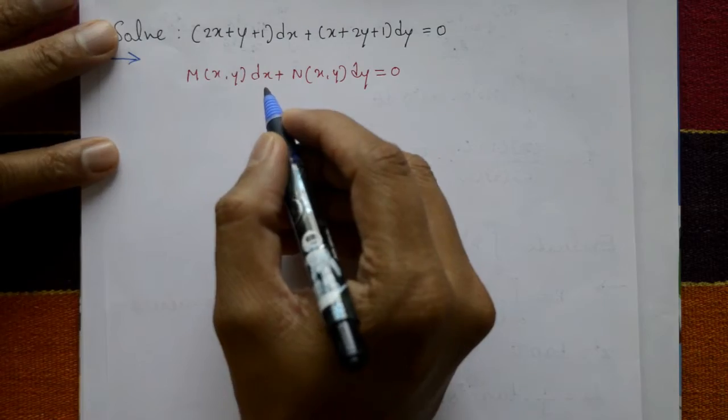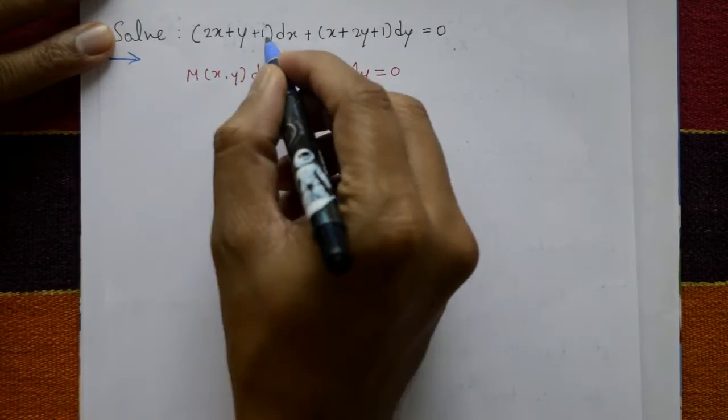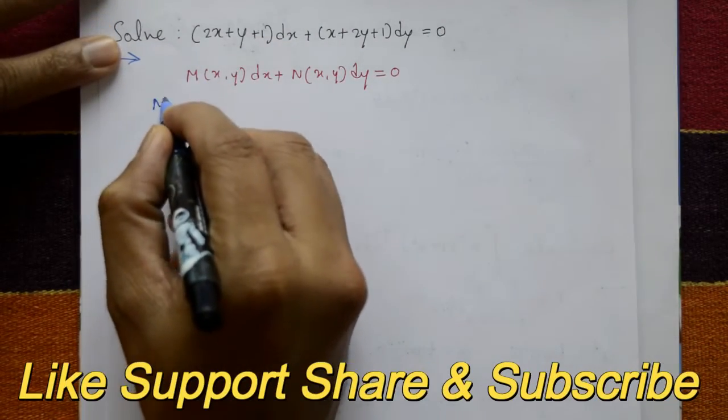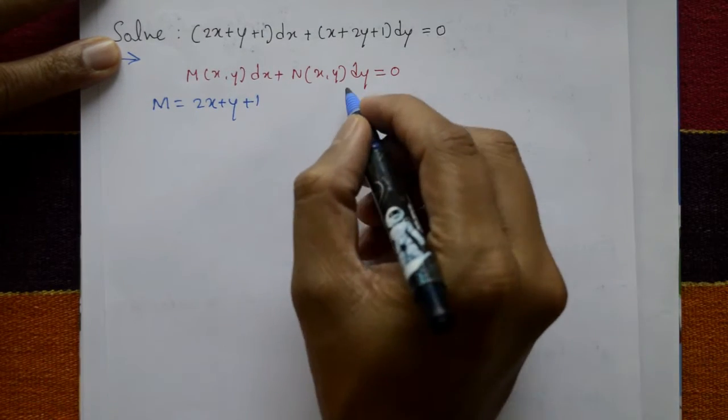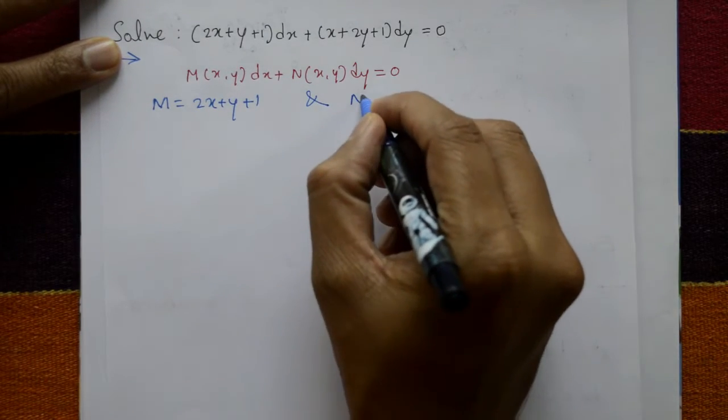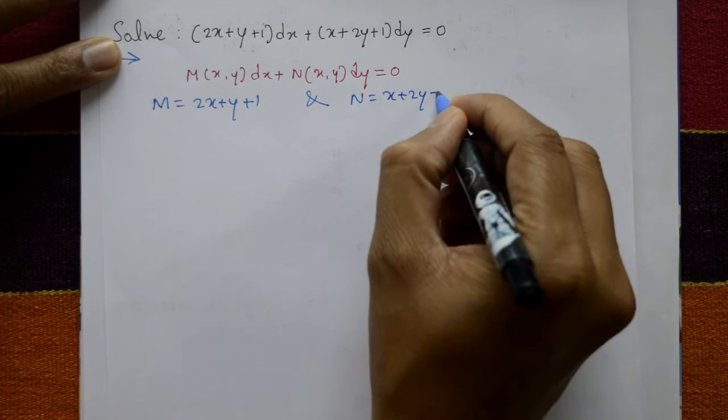Now find the solution. This is given M, M = 2x + y + 1. And given N, N = x + 2y + 1.